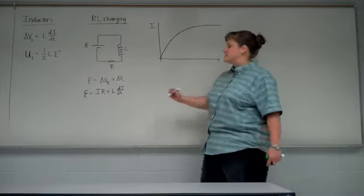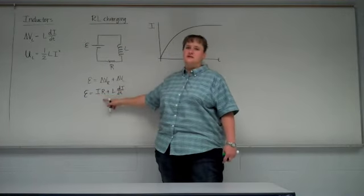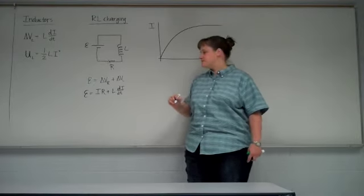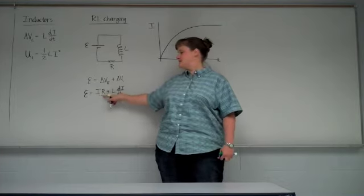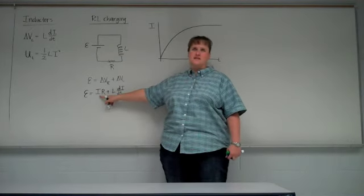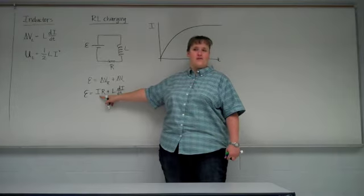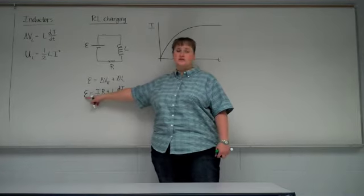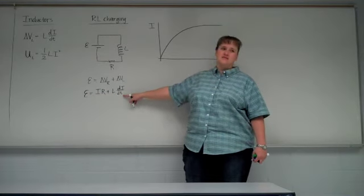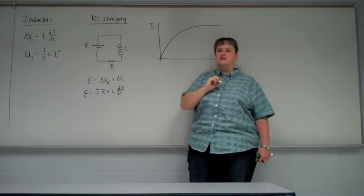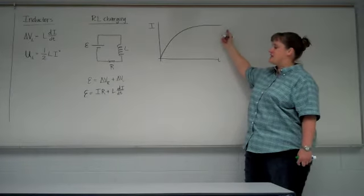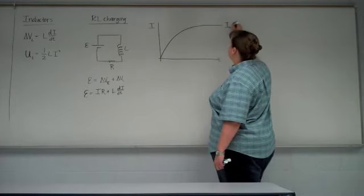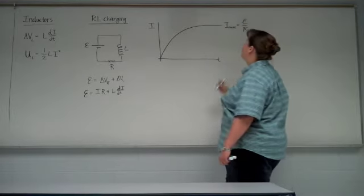As current increases, the IR term gets bigger and bigger. The L·dI/dt term then has to get smaller and smaller so that when we add them together, they still equal the battery voltage. Eventually, the absolute biggest the resistor voltage can be is the battery voltage divided by the resistance. That will happen when the current is no longer changing — we say it's at a steady state. Once the current reaches a constant steady-state value, all the voltage drop is across the resistor, so the maximum current is equal to the battery voltage over the resistance.